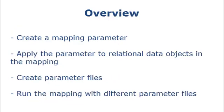In this demo, we'll explain how to create and use a mapping parameter so that we can change the source and target database connections between mapping runs. We'll create a mapping parameter to represent a database connection. We'll apply the parameter to the source and target relational data objects in the mapping. We'll create parameter files to define the different connection values. Then we'll run the mapping with the different parameter files.